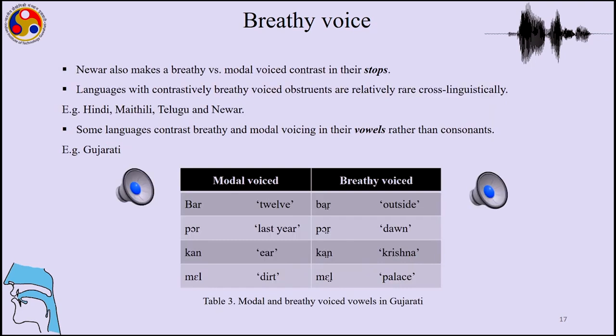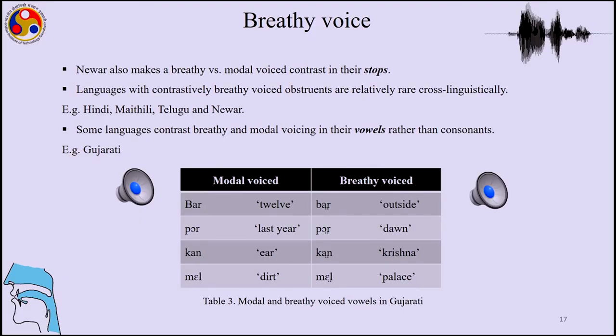Navar also makes a breathy versus modal voice contrast in stops. Many languages have breathy voice obstruents — though relatively rare cross-linguistically, this is common in South Asia. Several large languages like Hindi and Maithili have breathy voice obstruents. The contrast between breathy and modal voice stops can be heard in examples from Gujarati, where modal voice and breathy voice are contrasted.